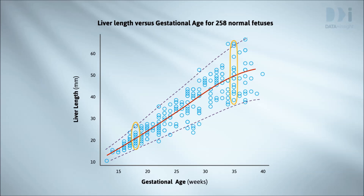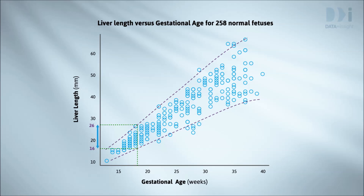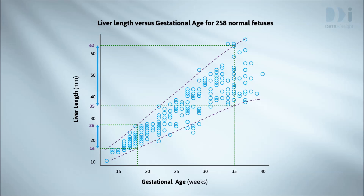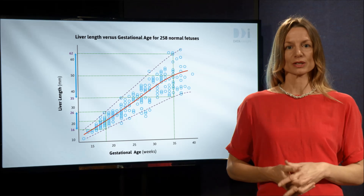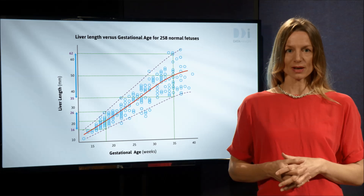Let's draw an envelope that includes almost all of the scatter and use that in the obvious way. This suggests that at 18 weeks the liver length of a healthy fetus would almost always be between 16 and 26 millimetres. At 35 weeks we'd expect it to be between 35 and 62 millimetres. Beyond that range the doctor might start worrying about the fetus's development. It's the trend curve and the scatter around that trend that has allowed us to do all of this. This simple example conveys many of the biggest ideas about the prediction problem, even though we've informally drawn the lines by eye.